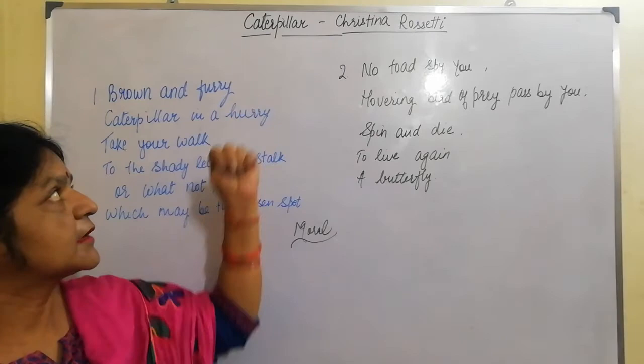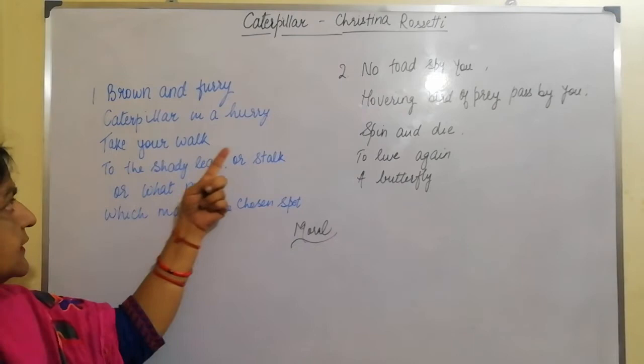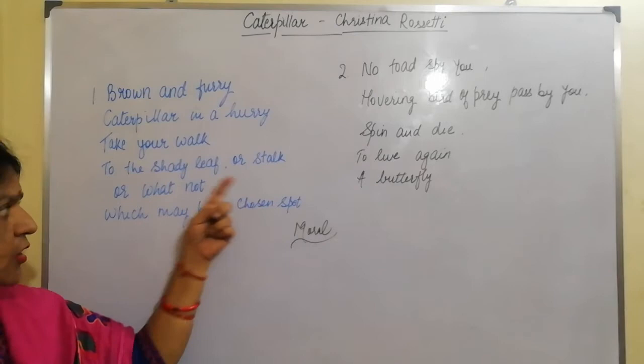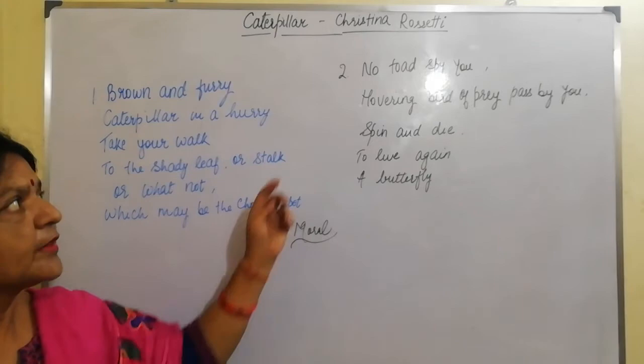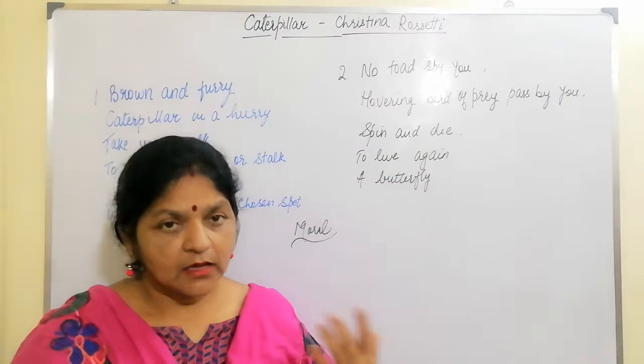Now let us begin the poem. The lines are: Brown and furry, caterpillar in a hurry, take your walk to the shady leaf or stalk, or what not which may be the chosen spot. No toads spy you, no hovering bird of prey pass by you — spin and die to live again a butterfly.